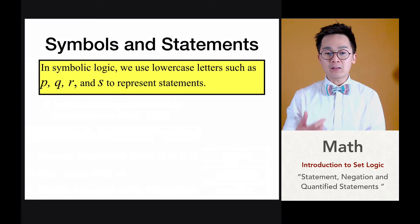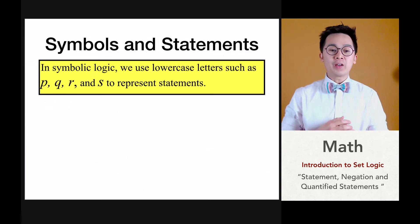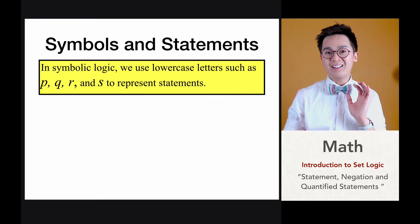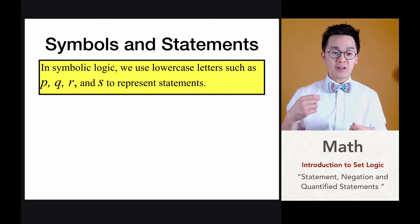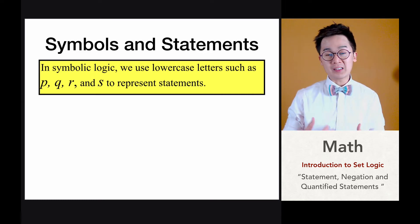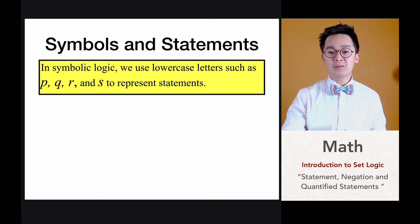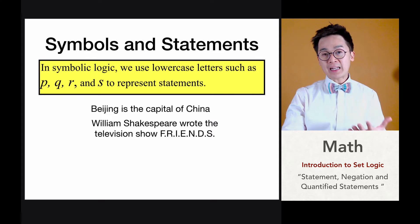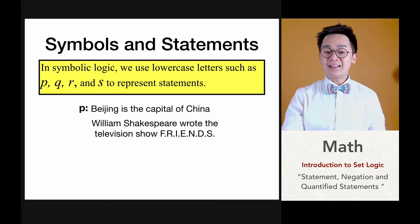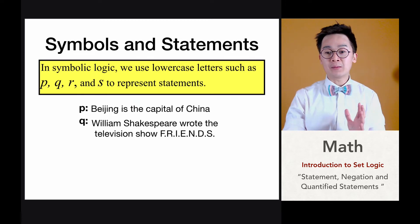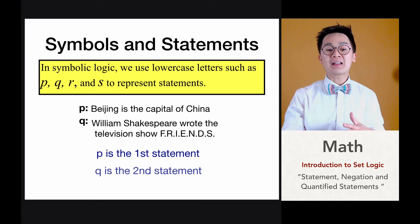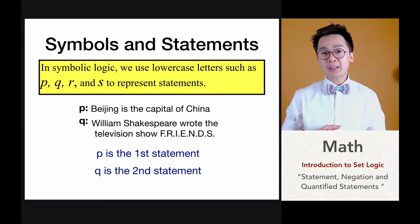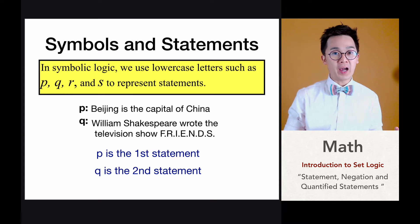Symbols and statements — since ang set logic it involves symbols tulad ng mga nauna nating lesson. Yung ating mga symbols na ginagamit dito ay usually mga lowercase letters, minsan italicized, given by P, Q, R, and S. Ito yung mga halimbawa ng mga variables or symbols na ginagamit natin to denote a statement in a given set logic problem. For example, meron tayong dalawang statements: Beijing is the capital of China and William Shakespeare wrote the television show Friends. Let's say P is our statement 1 which is Beijing is the capital of China, and Q would be our statement 2 which is William Shakespeare wrote the television show Friends. Usually P, Q, R, and S pagdating sa set logic — sa algebra it's usually X and Y, at sa trigonometry ginagamit natin mga Greek letters like theta, beta, alpha.